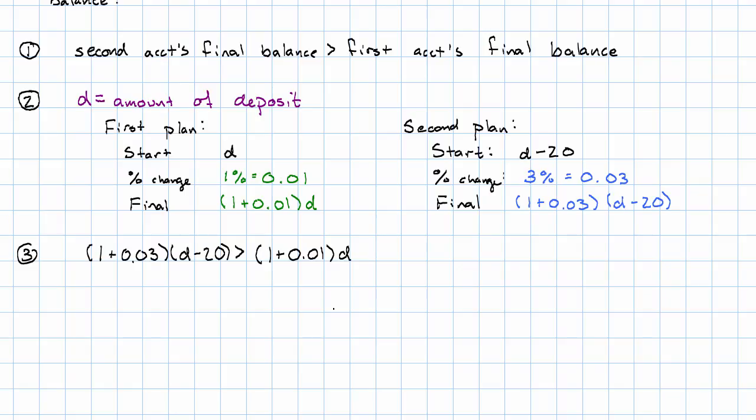I'm going to start by simplifying my two expressions. First, I'm going to actually do the addition. 1.03 times D minus 20 is greater than 1.01 times D. Now we'll distribute.